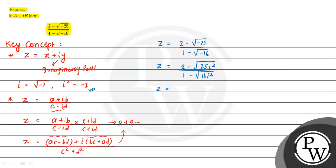So now Z can be written as 2 minus 5i divided by 1 minus 4i.